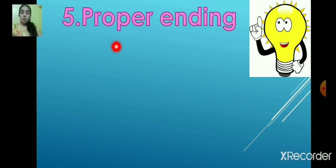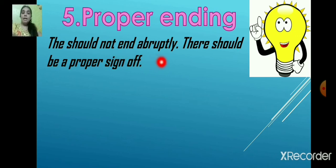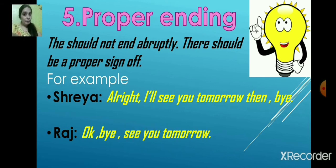Point six: proper ending. Your dialogue must finish in a proper way — it should not look like you are going to continue the dialogue. The dialogue should not end abruptly; there should be a proper sign-off. For example, Shreya says 'Alright, I'll see you tomorrow then. Bye.' And Raj replies 'Okay, bye. See you tomorrow.' That means the dialogue is properly concluded.